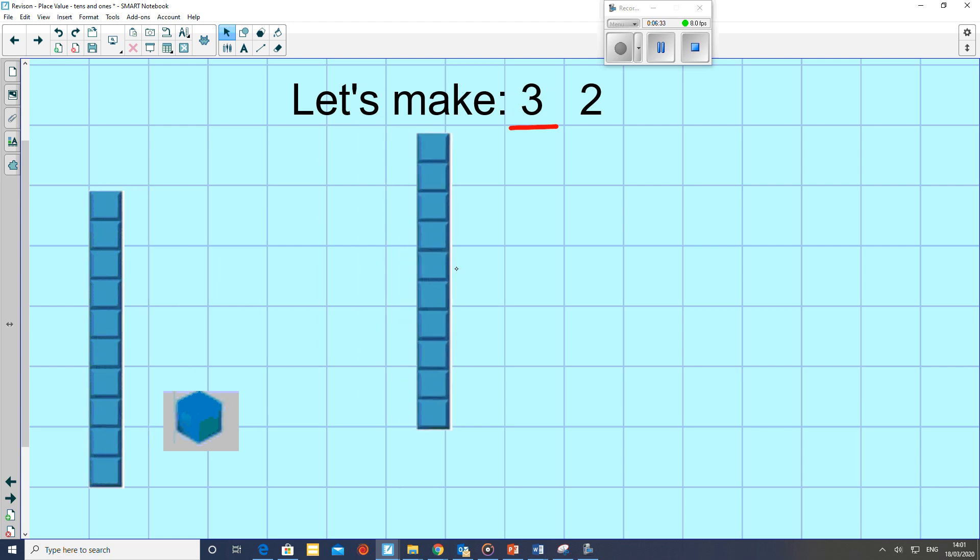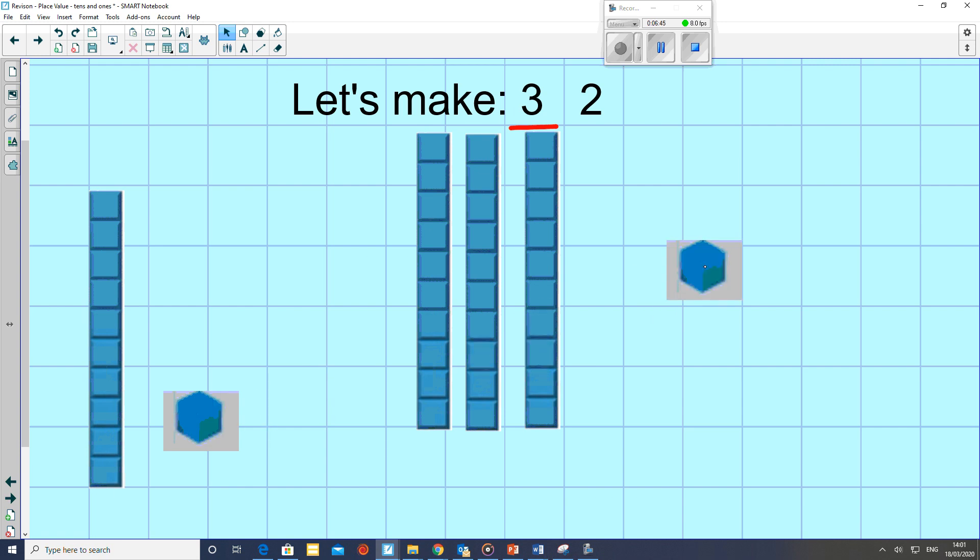So here we go. We've got 10, 20, 30. That's the 3 tens. And I'm going to add 2 ones. Let's put them over here. There are 2 ones.